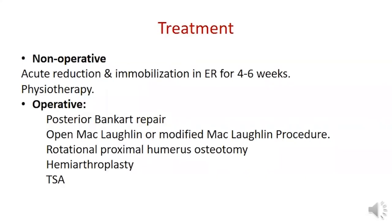Arthroscopic posterior Bankart repair is indicated for recurrent instability despite proper physiotherapy. For reverse Hill-Sachs lesions smaller than 40%, the McLaughlin procedure is indicated — suturing or transferring the subscapularis into the defect, or a modified McLaughlin by transfer of the lesser tuberosity. Reverse Hill-Sachs lesions larger than 40% may require humeral rotation osteotomy or hemiarthroplasty, depending on the presence or absence of glenohumeral osteoarthritis.